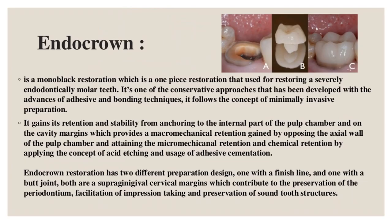Endocrown: a monoblock restoration — a one-piece restoration used for restoring severely damaged endodontically treated molar teeth. It is one of the conservative approaches developed with advances in adhesive and bonding techniques, following the concept of minimally invasive preparation. It gains retention and stability from anchoring to the internal part of the pulp chamber and cavity margins, providing macro-mechanical retention from the opposing axial walls of the pulp chamber and micro-mechanical and chemical retention through acid etching and adhesive cementation. Endocrown preparation has two designs: one with a finish line and one with a butt joint — both with supragingival cervical margins.